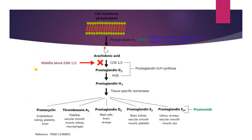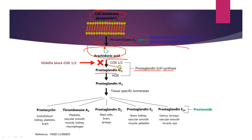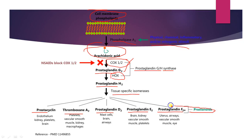This is the mode of action of non-steroidal anti-inflammatory agents. Cell membrane phospholipids, in the presence of phospholipase A2 and physical, chemical, inflammatory and mitotic stimuli, form arachidonic acid. This arachidonic acid is converted into prostaglandin G2 in the presence of prostaglandin G and H synthase, which is COX-1 and COX-2. Hydroperoxidase activity then leads to formation of prostaglandin H2. Further, tissue-specific isomers are formed: prostacyclin, thromboxane, prostaglandin D2, prostaglandin E2, and prostaglandin F2α. These are all called prostanoids.